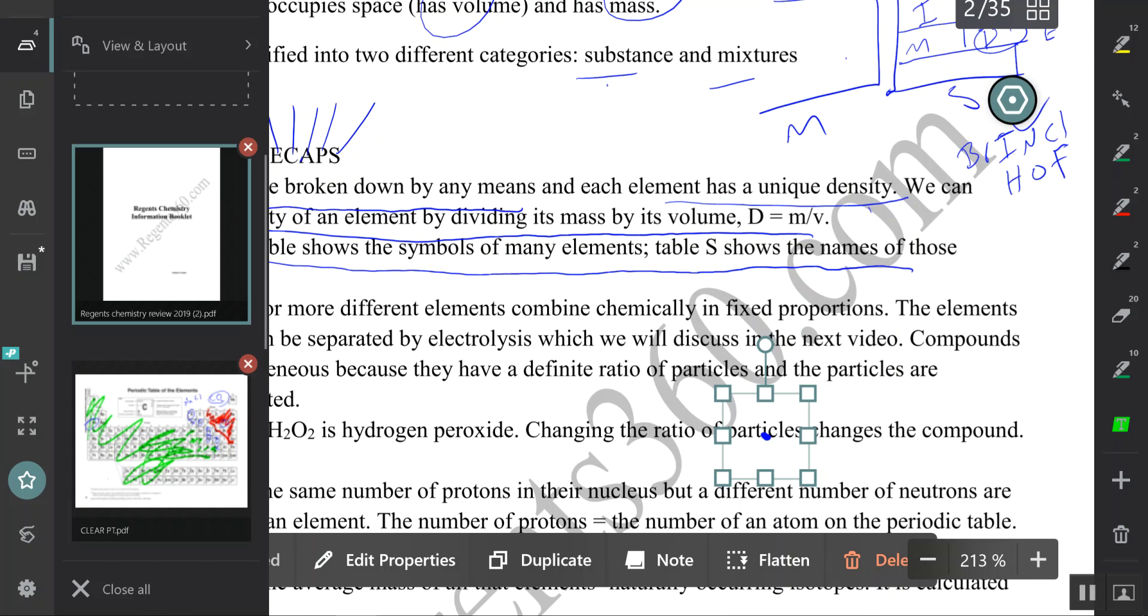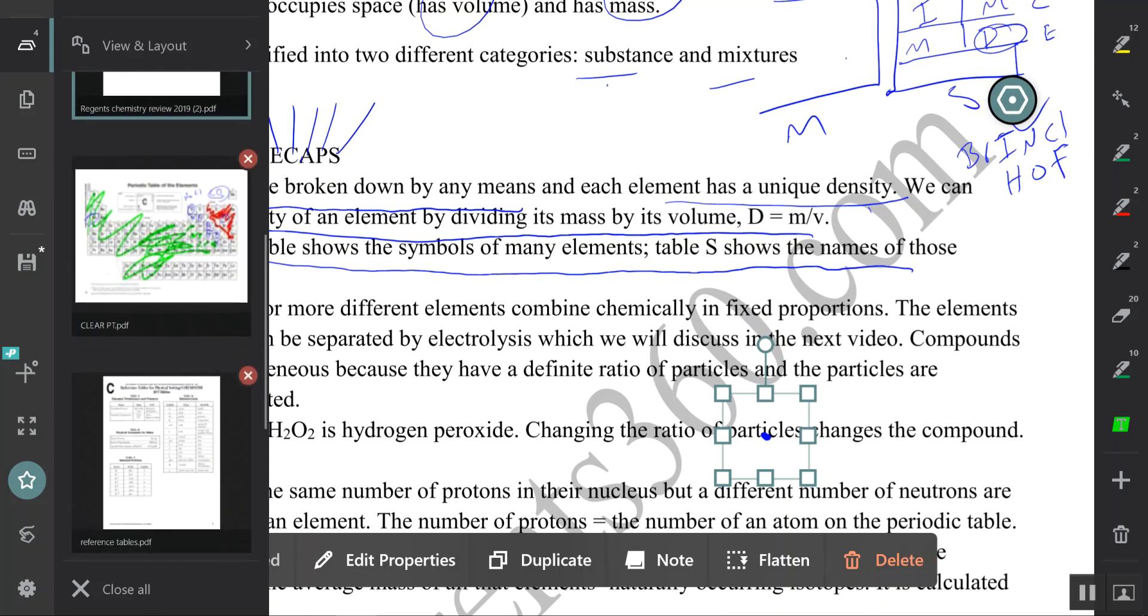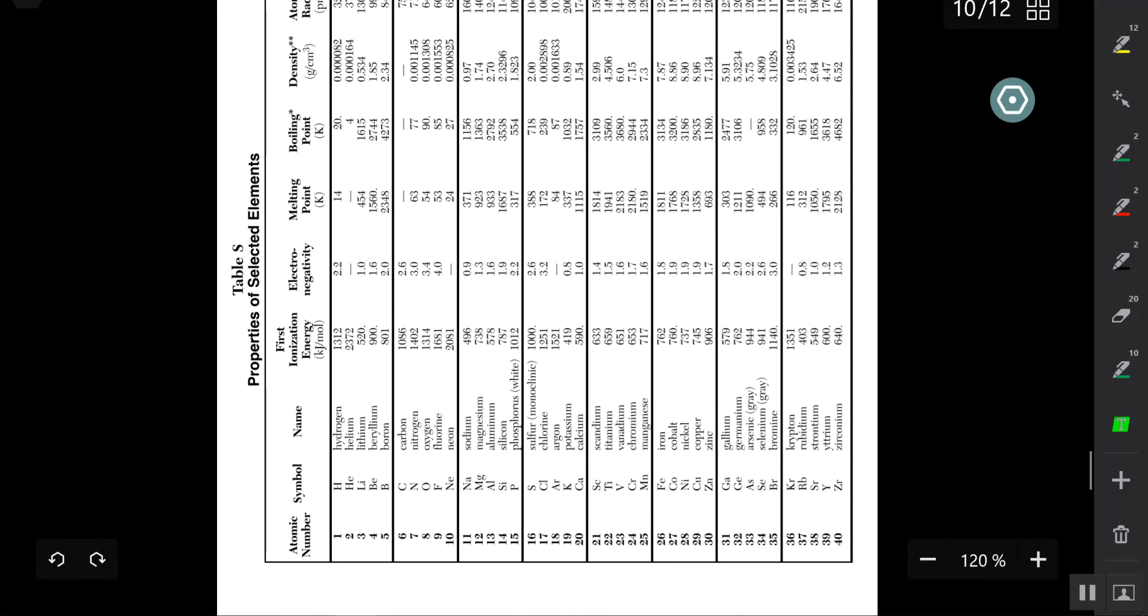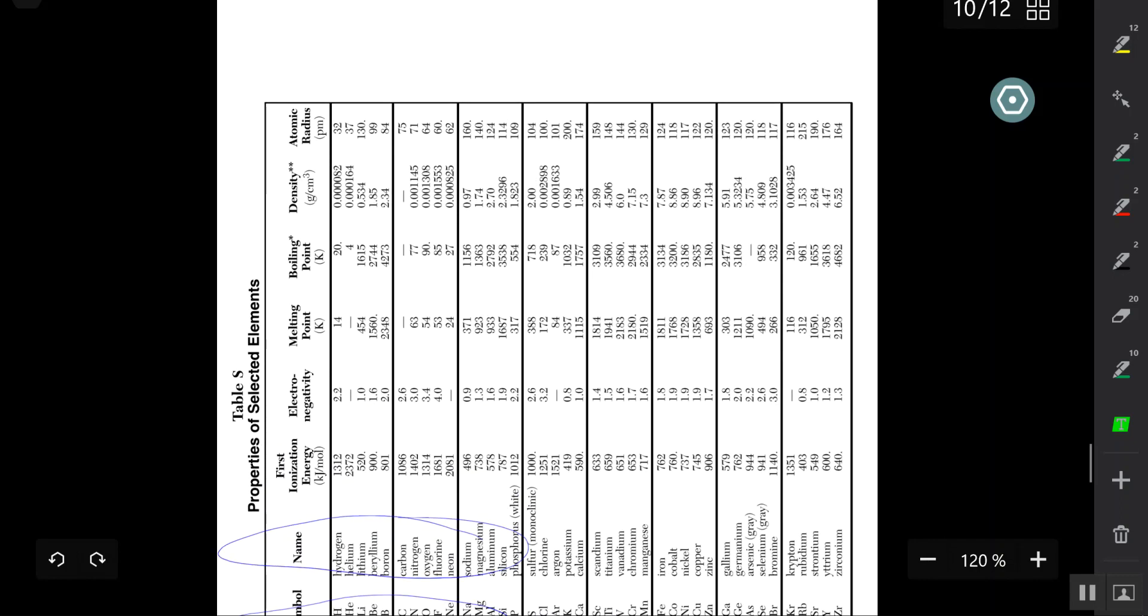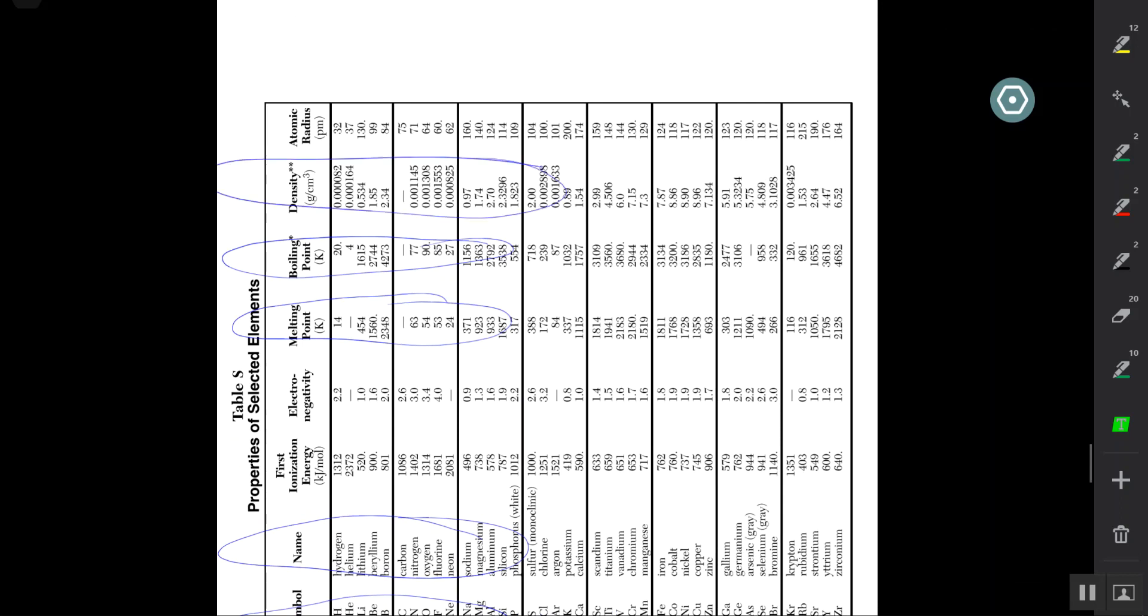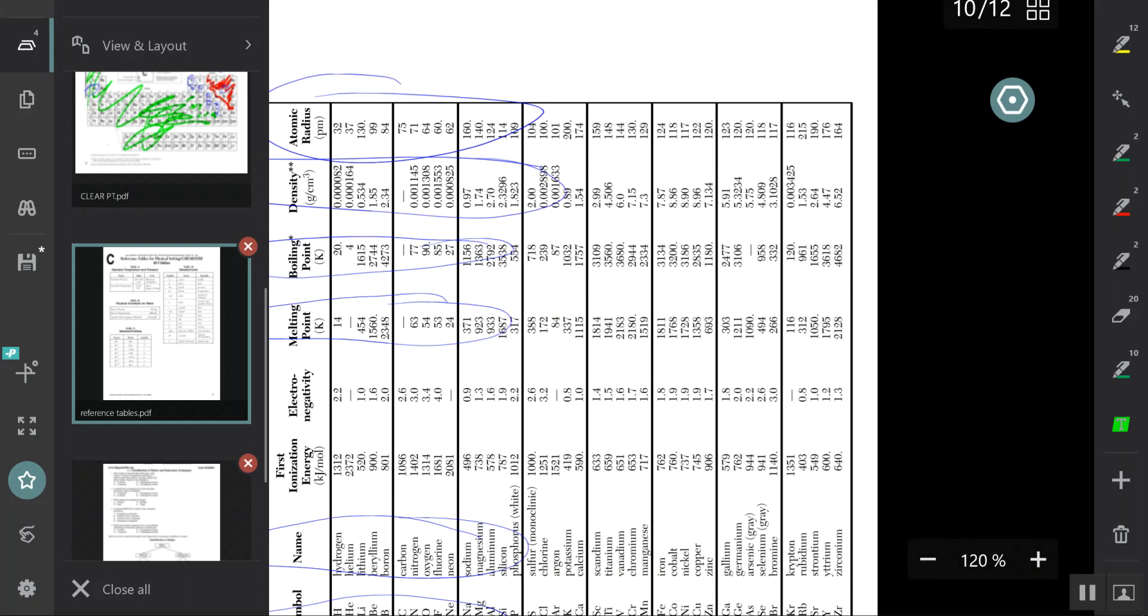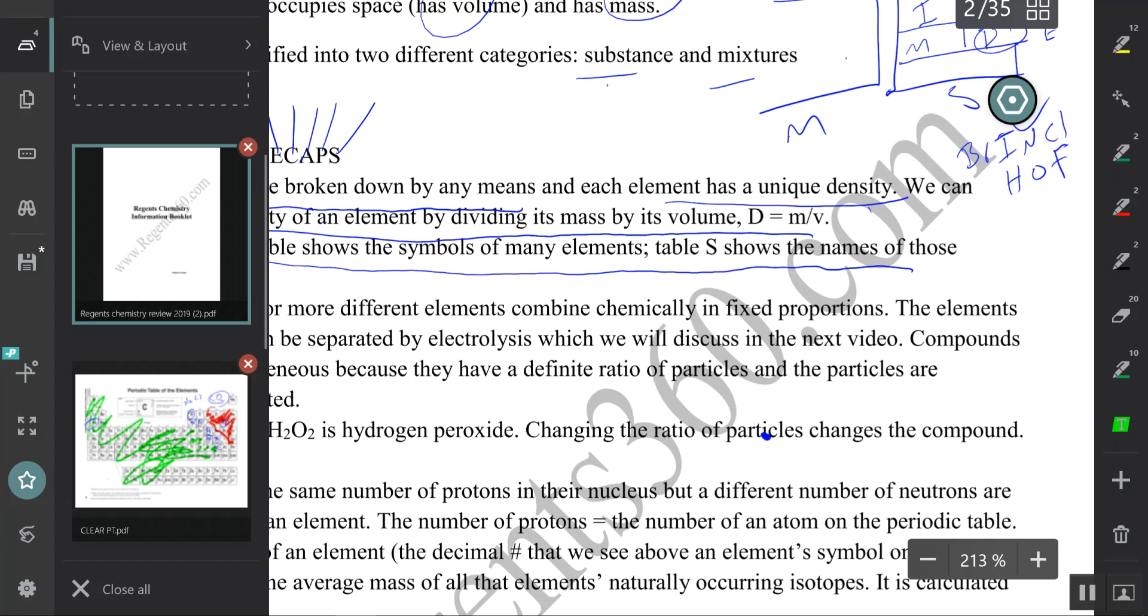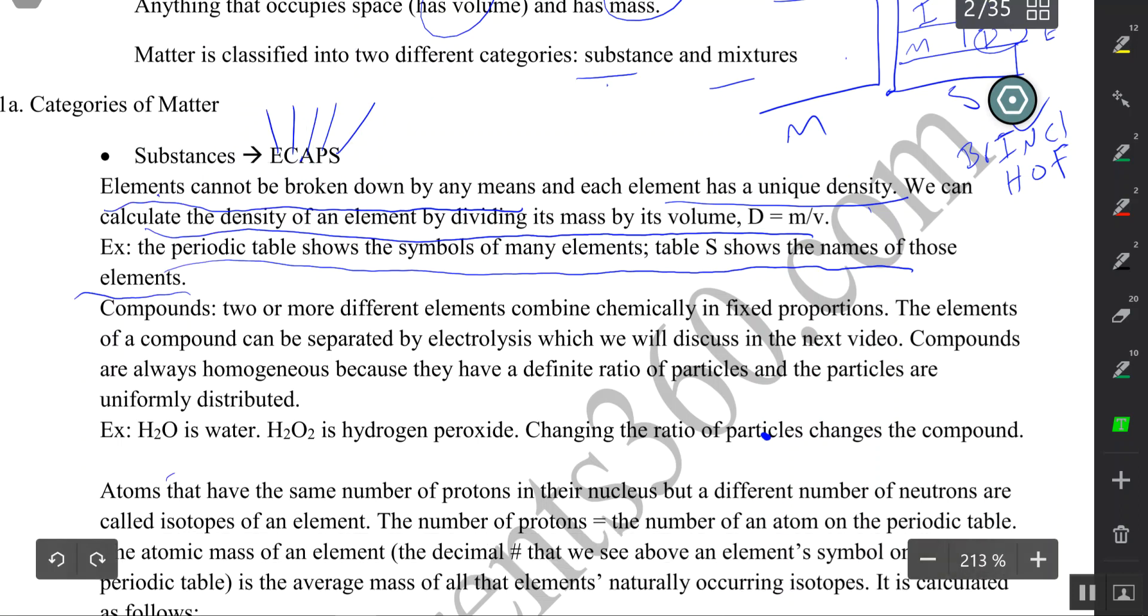Each element has a unique density. Let's take a look at table S. Here are the element symbols, here are the element names. This is the temperature in Kelvin at which they melt, this is the temperature in Kelvin at which they boil. Here are their densities and their atomic radius.